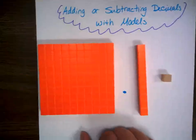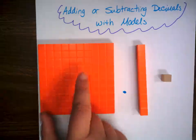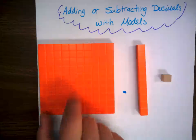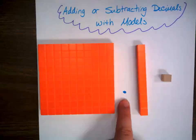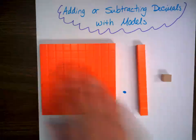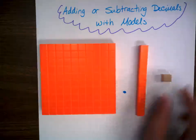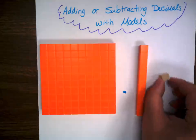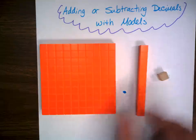It might be tricky to think about — you might say, no, that's supposed to be a hundred. But with our frame of reference, with our decimal point being here, we see that this is worth one, this is worth a tenth, and this is worth a hundredth.